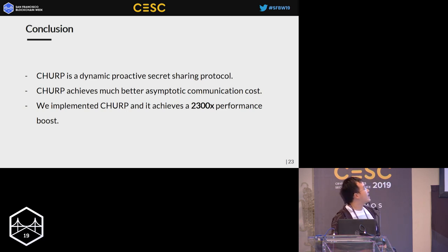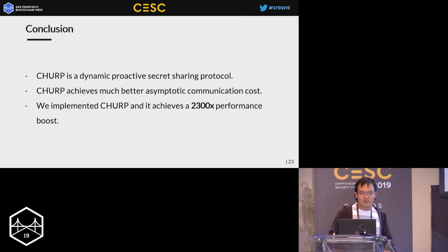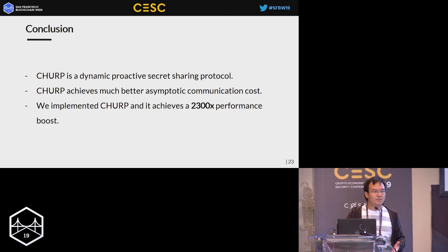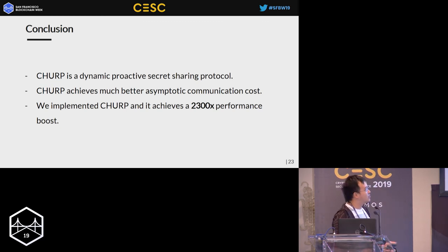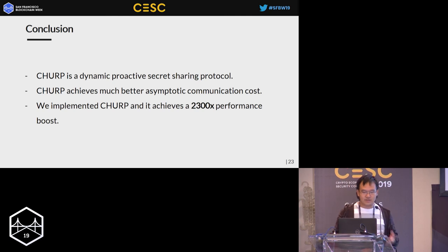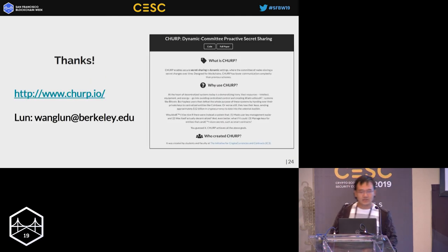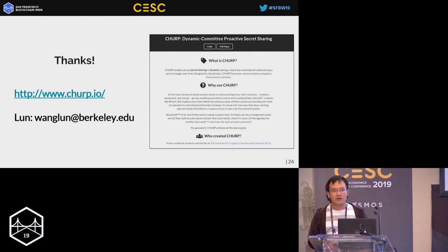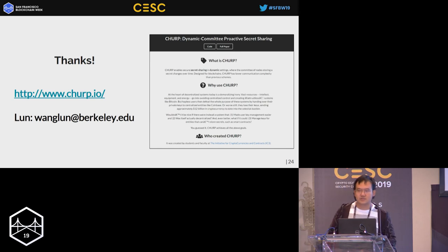To summarize the key points: CHIRP is a dynamic proactive secret sharing protocol. The difference between it and other secret sharing protocols is it has a very good asymptotic communication cost — O(n²) instead of O(n⁴). We implemented CHIRP and it achieves a 2,000x performance boost. Thanks so much. If you are interested please check our website, and if you have any questions feel free to ask or send me an email.